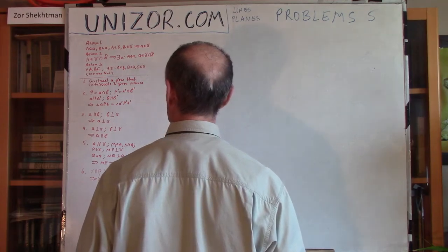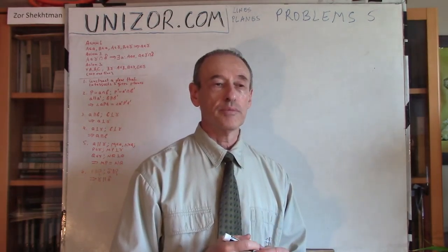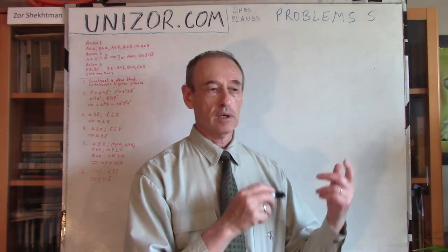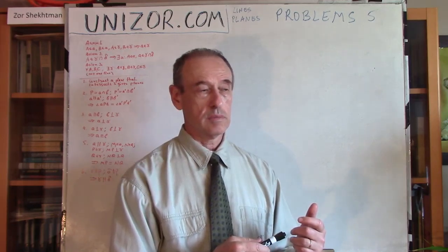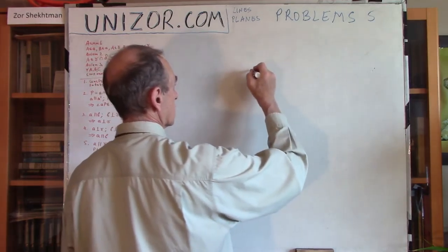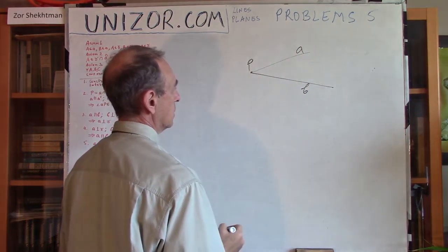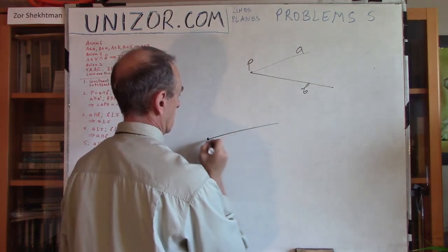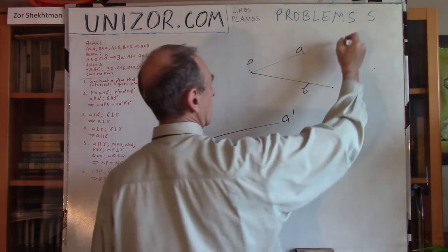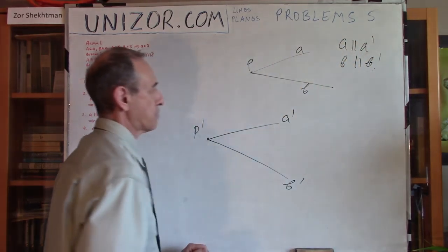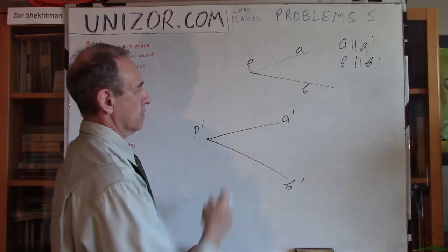Next — I believe we addressed this before, but as a repetition I'd like to mention it. If you have two angles in space formed by two pairs of half-lines, and the sides of the angles are correspondingly parallel, then the angles are congruent. So you have one angle with vertex P and rays toward A and B, and another with vertex P prime and rays toward A prime and B prime, where A is parallel to A prime and B is parallel to B prime in three-dimensional space. Then these two angles are congruent.